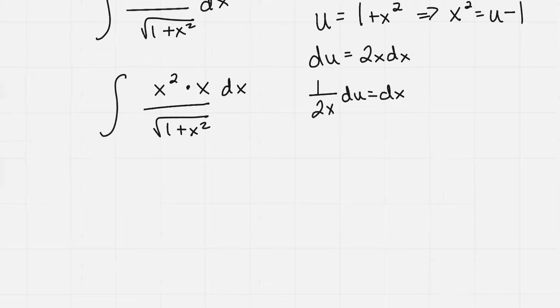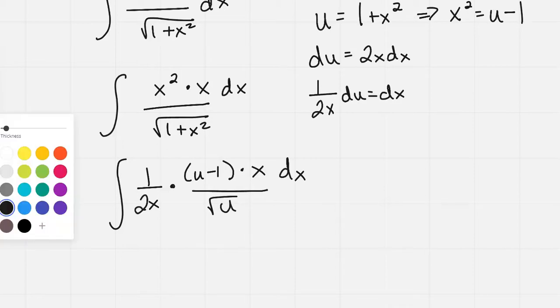I'm going to do all my substitutions, and I get the integral of 1 over 2x times, now x squared was u minus 1, so I'm going to put that in there, times x and that dx all over the square root of u.